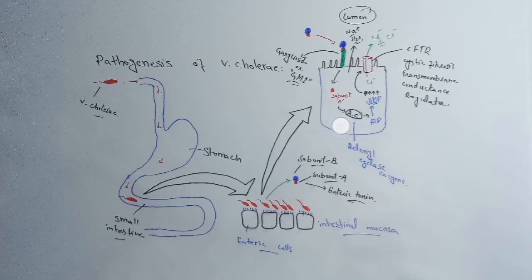This subunit A will activate adenylyl cyclase enzyme, which causes the conversion of ATP into cyclic AMP. Cyclic AMP will activate this channel called cystic fibrosis transmembrane conductance regulator, through which chloride ions move out.